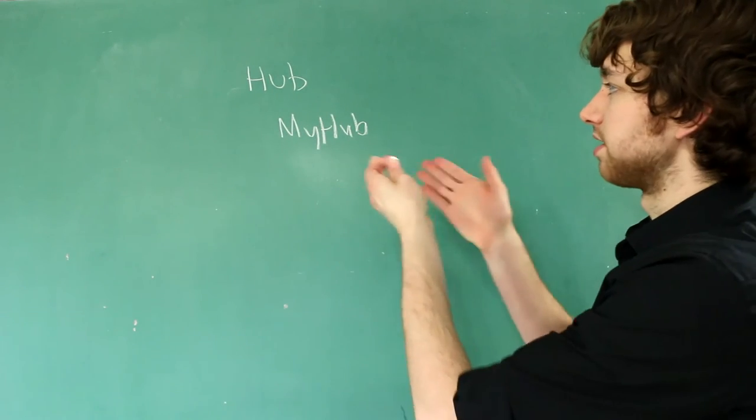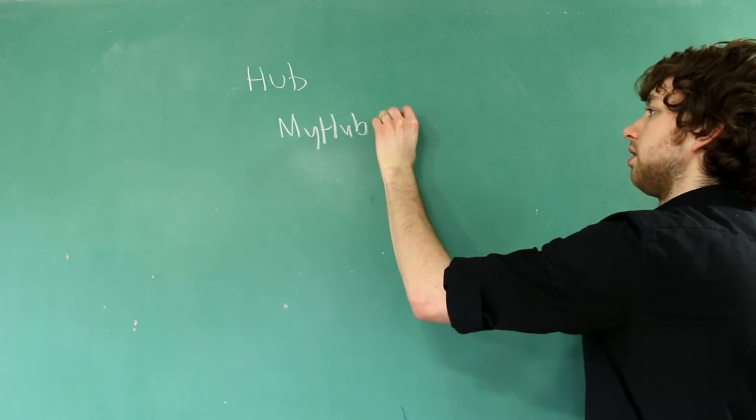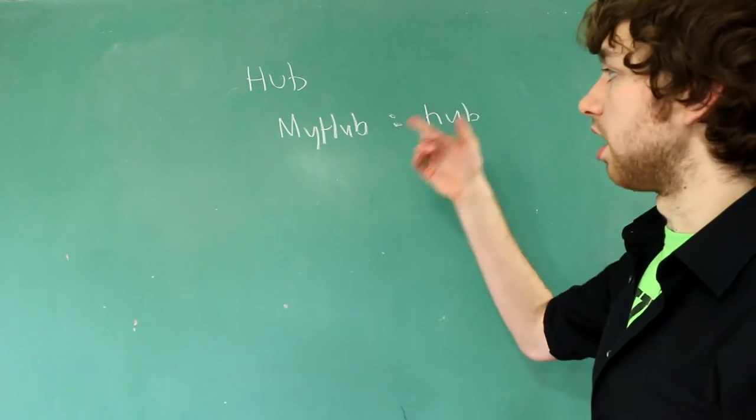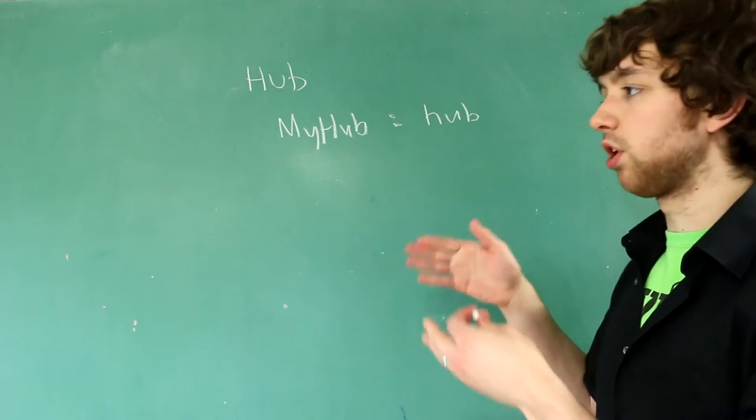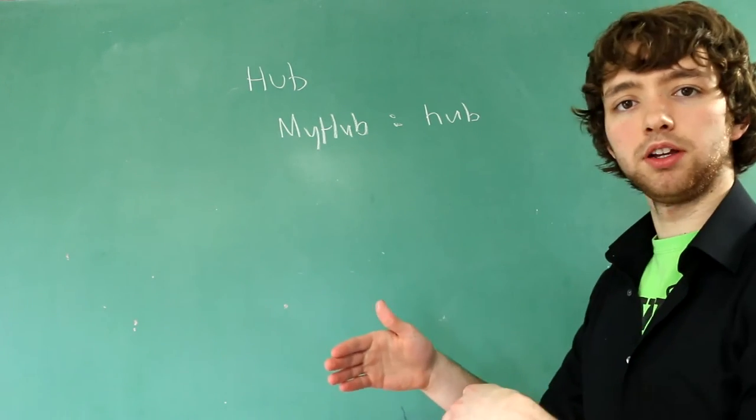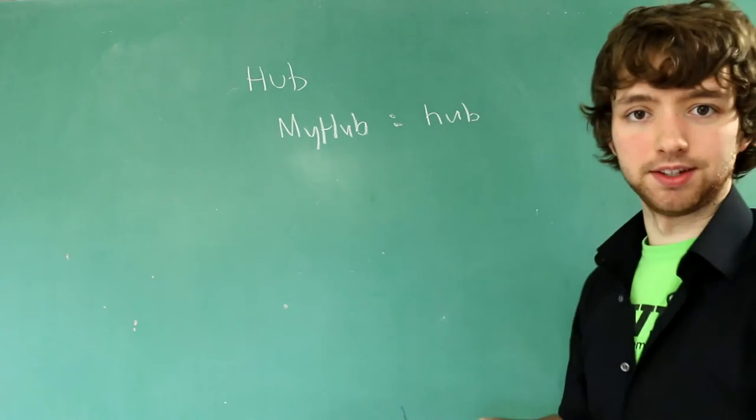We could say it's called MyHub. We need to tell C# that this is a hub, so I put a colon and then just put Hub. Now, this is a hub class.